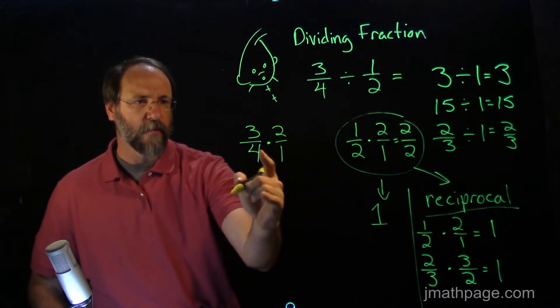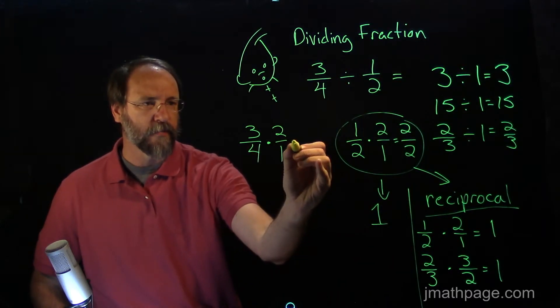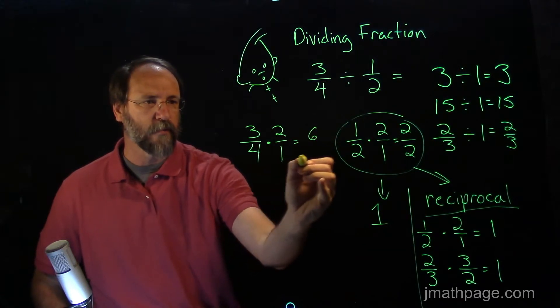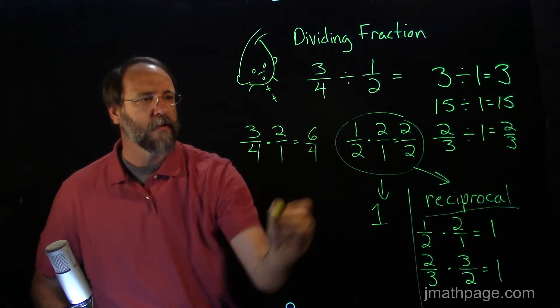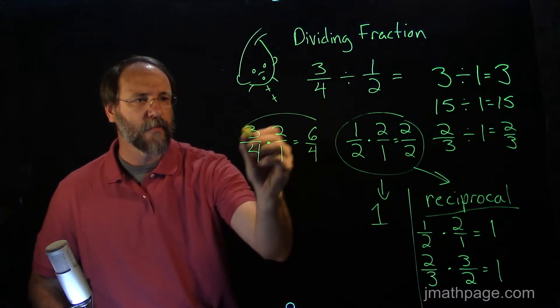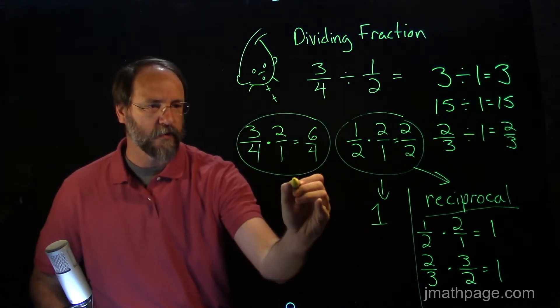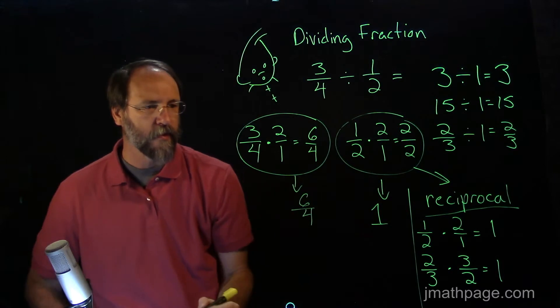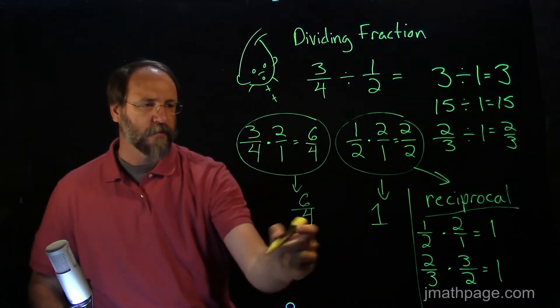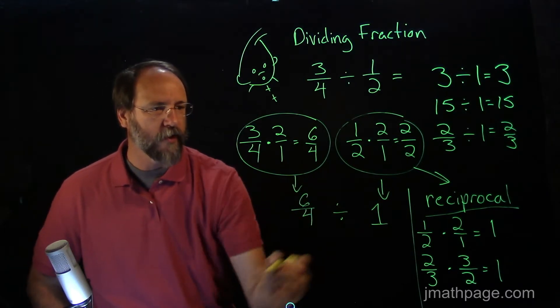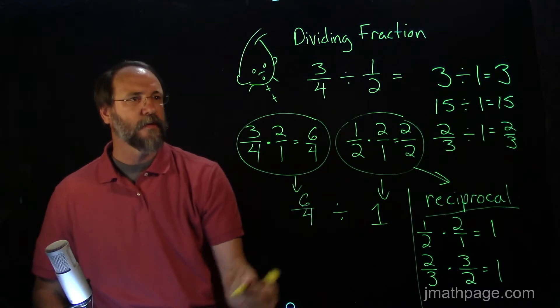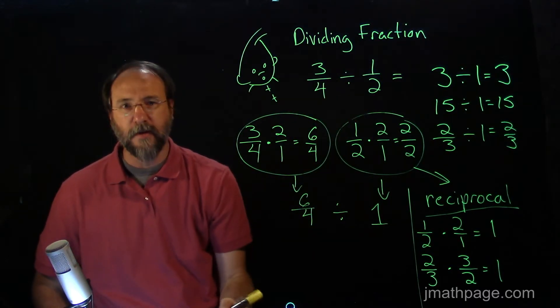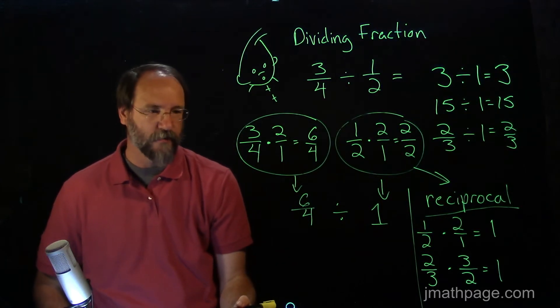So far, so good? So let's think about this for a moment. Three-fourths times two over one is equal to three times two is six, and four times one is four. So when we get all this together, this gives us six-fourths. Now we have six-fourths divided by one. I started with three-fourths divided by a half. Now I have six-fourths divided by one. That's what I wanted, because I like dividing by one.